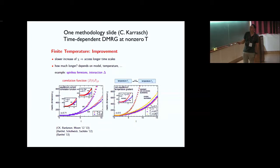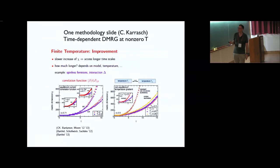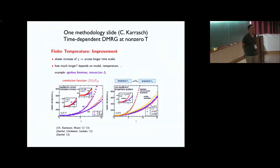That's about what I wanted to say for numerics. I now want to give an overview of many-body localization and how it relates to integrability. If you have questions about either entanglement or DMRG, please ask now, because we're going to change gears and talk about Anderson localization for background, and then get into MBL where these methods are useful.